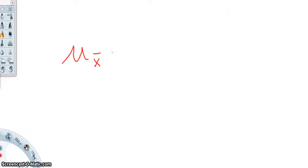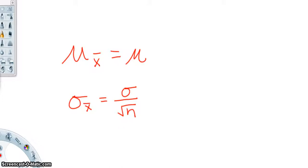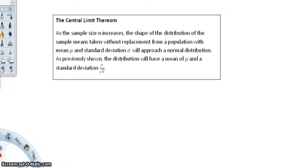We have seen that mu x-bar equals mu, the population mean, and sigma x-bar equals sigma divided by the square root of n. The Central Limit Theorem states: as the sample size n increases, the shape of the distribution of sample means, taken without replacement from a population with mean mu and standard deviation sigma, will approach a normal distribution with mean mu and standard deviation sigma divided by the square root of n.